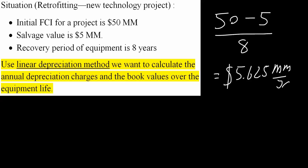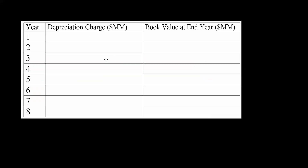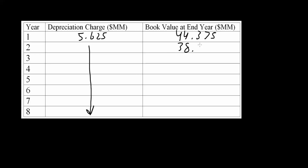Using the linear depreciation method is very simple once you have this information. The depreciation charge will be 5.625 million per year. The initial FCI was $50 million, so in year 0 that's 50. In year 1, it's 50 minus the first depreciation charge: 50 minus 5.625 gives us 44.375. Then minus 5.625 again gives 38.75, and minus 5.625 again gives 33.125.